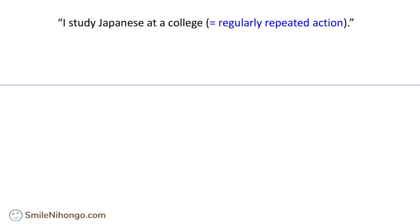Let's try another example. This is true for you, right? 'I study Japanese at a college.' Here again, you have to use the te-form imasu expression. Because when you study something, it's not a one-time thing — you will have to repeat practicing, memorizing, and studying over and over again. So here again, you have to use te-form imasu.